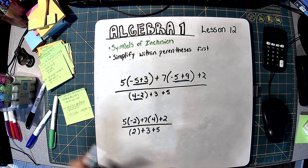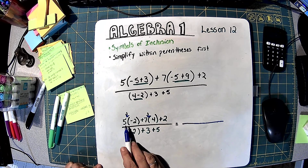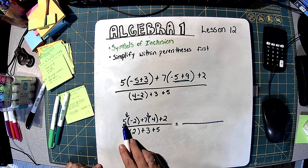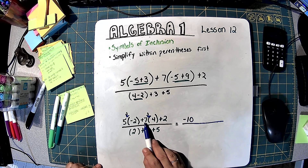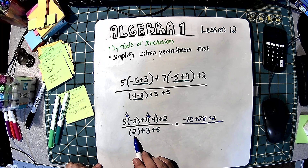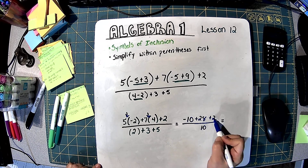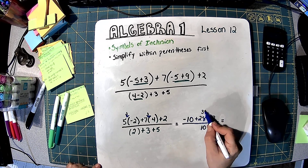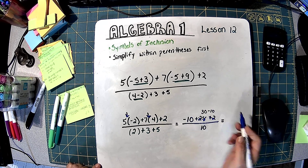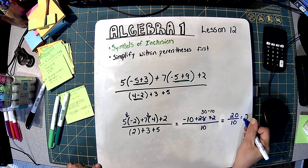My next step is to multiply. I need to multiply where numbers are touching parentheses with no plus or minus symbol in between. So 5 times negative 2 is negative 10. And 7 times 4 is 28, plus 2. On the bottom, I have 2 plus 3 plus 5 — all we're doing is adding: 2 plus 3 is 5, plus 5 is 10. Putting the positives together: 28 plus 2 is 30, minus 10 is 20 over 10, which is 2.